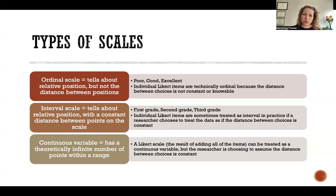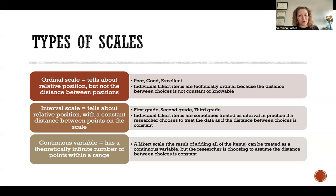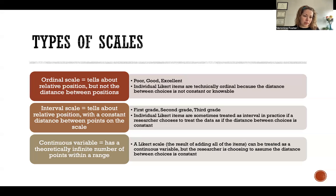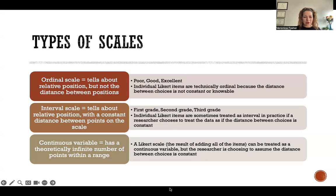But again, if we treat the total as a continuous variable, we're still making the assumption that the distance between options is equal — that there is a constant predictable distance between, say, agree and slightly agree, or between agree and slightly disagree. We are making the assumption that those differences are equal, and we can't know that. So we can treat Likert scales as interval or continuous variables, but technically speaking, they are on an ordinal scale. Thank you so much for watching this video, and I hope you have a great day.